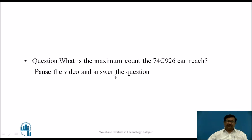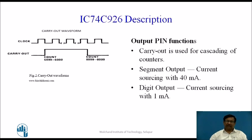Question: What is the maximum count the IC74C926 can reach? Since it consists of four decade counters, when they are reset, the counter content becomes 0, 0, 0, 0. Since they are decade counters, each digit can reach up to 9. Therefore, the maximum value is 9, 9, 9, 9 — so 9999 is the maximum count the IC74C926 can reach.